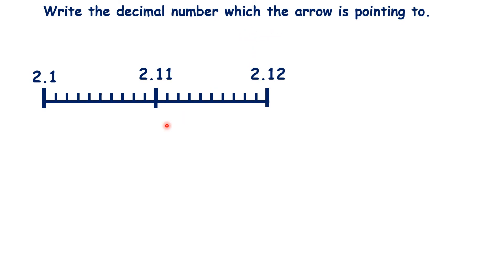So again, let's look at the easy way to solve this. We can write 2.100, because putting zeros on the end of a decimal number doesn't change it, 2.110, and 2.120.